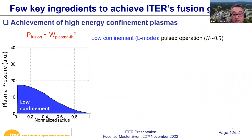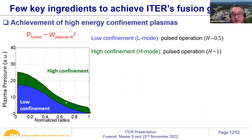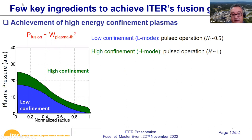A key ingredient for high fusion performance in ITER is high energy confinement — the H-mode, discovered 40 years ago at ASDEX at IPP Garching. In low confinement mode you get typical plasma pressure; in H-mode, a region at the plasma edge forms where turbulence-driven losses are reduced. Since fusion power goes as pressure squared, a factor of two in pressure gives a factor of four in fusion power. This is used to design ITER with H=1, meaning the confinement equals our scaling law prediction.